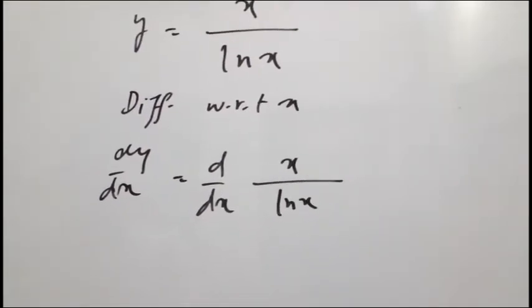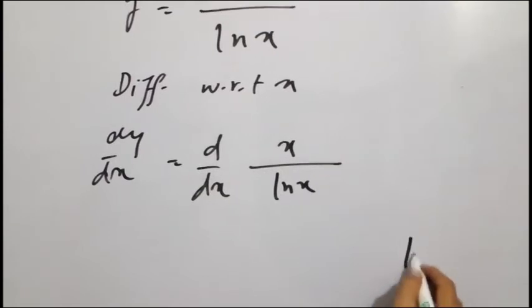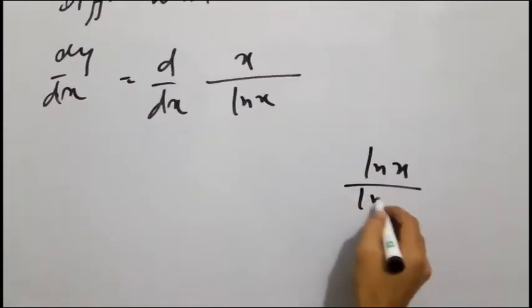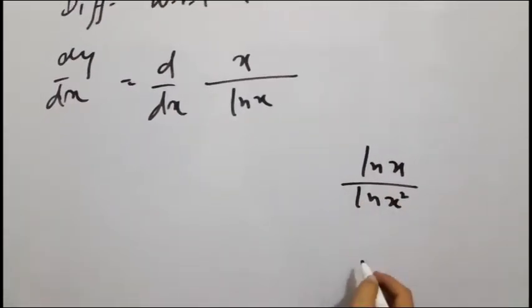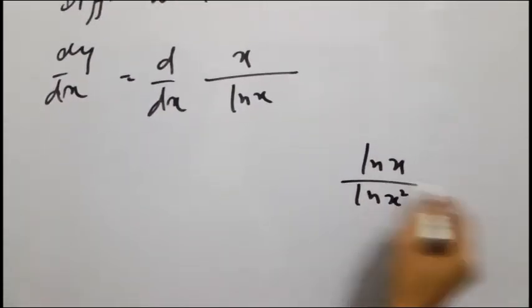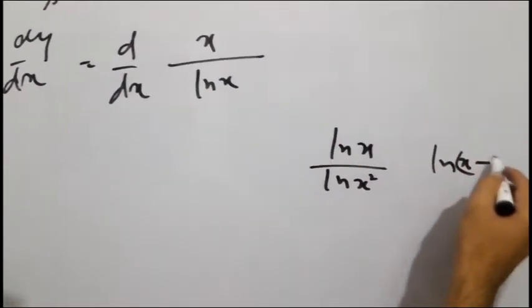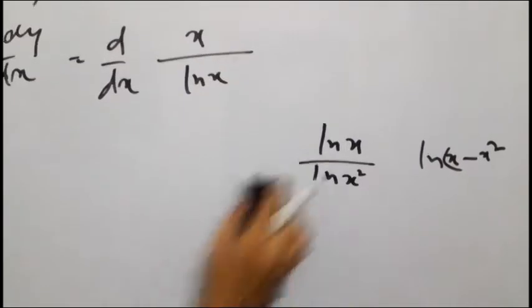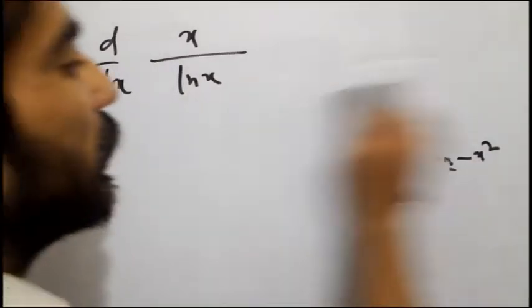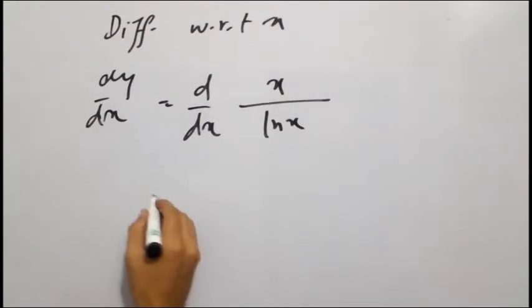अगर यह दो values इस तरह दी होतीं, natural log of x over natural log of x, इसके area कुछ भी दिया होता, तो हम इसको इकठा भी लिख सकते थे — natural log of x, x minus x square। लेकिन यह उसमें तब्दील नहीं होती। यह न समझ लेना कि इस पर वो फार्मूला लग रहा है — इस पर quotient rule apply करना है।